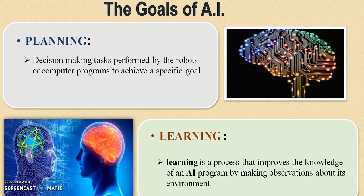The next goal is planning, which involves decision making — the machine should have the capability to make decisions to reach a specific goal. If the machine has such decision-making capability, then we can say it has planning ability. The next goal is learning — learning from past experience, as humans do. By using learning, the machine should improve its knowledge and provide responses to the environment whenever necessary.